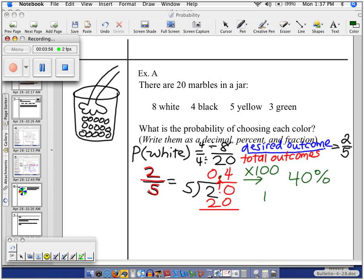If you don't trust me, here you go. Here's 100 times .4. Count your decimal places. There's one of them. So you move your decimal point one time. So 40% chance will be a white marble. 40% chance.